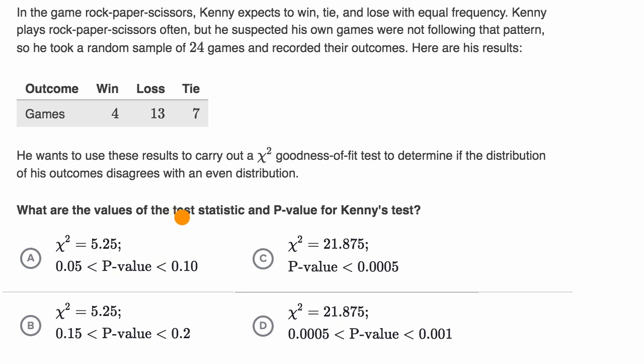What are the values of the test statistic, the chi-squared test statistic, and p-value for Kenny's test? So pause this video and see if you can figure that out. Okay, so he's essentially just doing a hypothesis test using the chi-squared statistic, because it's a hypothesis that's thinking about multiple categories.